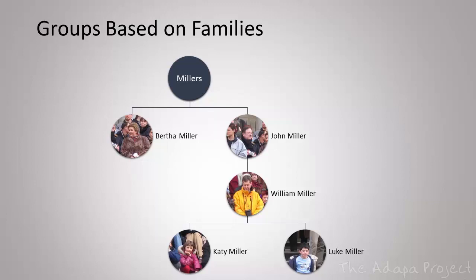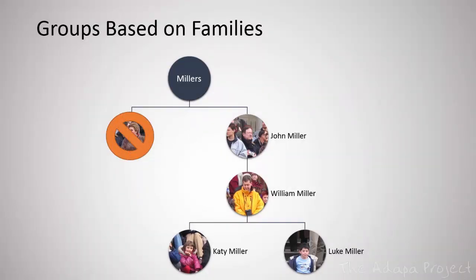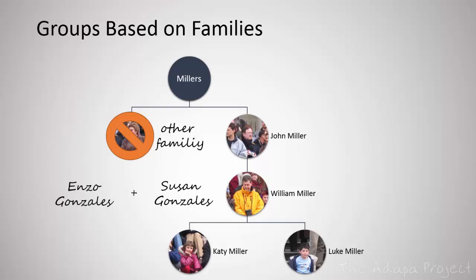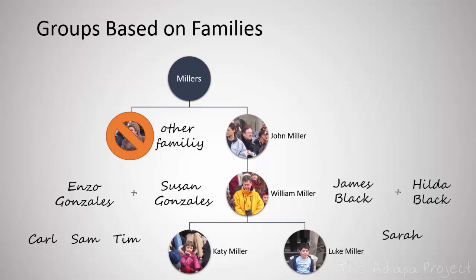After gathering more data, you found out that Bertha Miller is actually not John Miller's wife, but belongs to another Miller family. Another problem with the family tree is that people can change their family names. This is true for Susan Gonzalez, who is married to Enzo Gonzalez. It turns out that she is William Miller's sister and she and Enzo have three children together. Even more information revealed that William and Susan have a brother called James — James Black — who is married to Hilda Black and they have a daughter called Sarah.